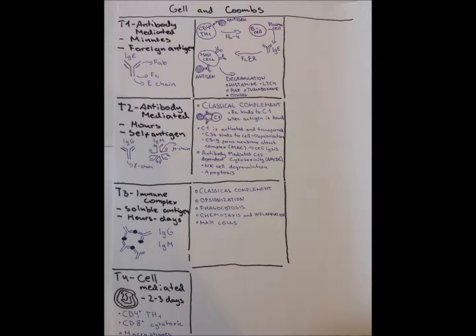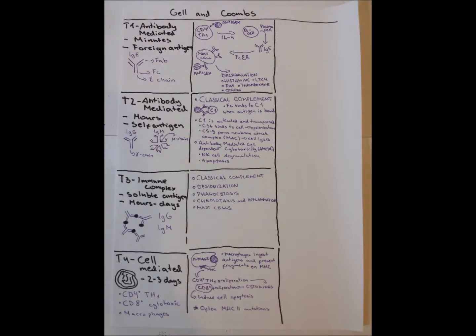Type 3 usually consists of classical complement and opsonization. Also, mast cells degranulate and cause chemotaxis and inflammation of the region.